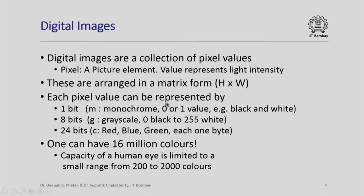Each pixel value can be represented either by 1 bit, which means it is a monochrome image — 0 or 1 — that is either black or white. It could be represented by 8 bits, which is called a grayscale image, where 0 would mean black and 255 will mean white, giving you all shades of black and white. A color image can be represented by 24 bits, where you use 8 bits to represent red, 8 bits for blue, and 8 more bits for green.